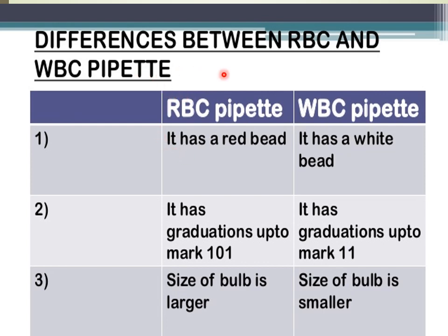The difference between RBC and WBC pipettes: the RBC pipette has a red color bead in the bulb, while the WBC pipette has a white color bead. In the RBC pipette, graduations go up to mark 101, while in the WBC pipette they go up to mark 11. The RBC pipette has a larger bulb, while the WBC pipette bulb is smaller.